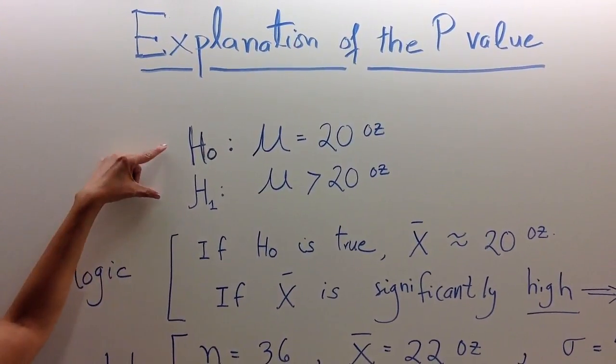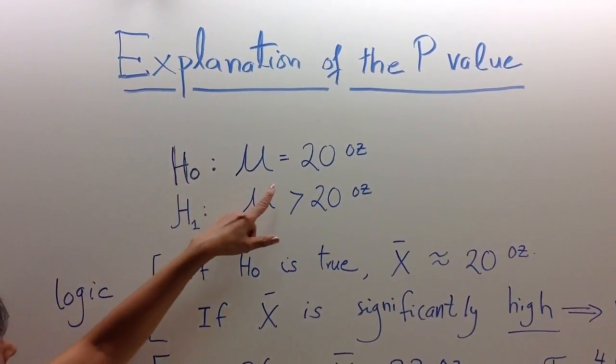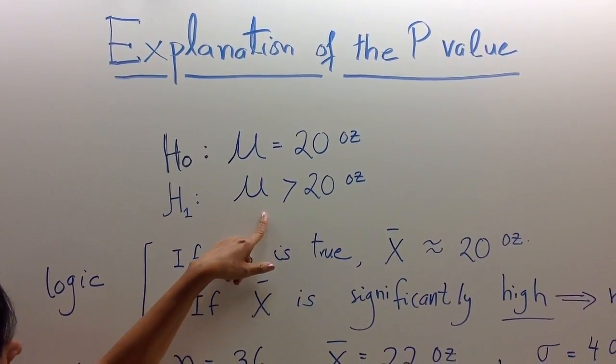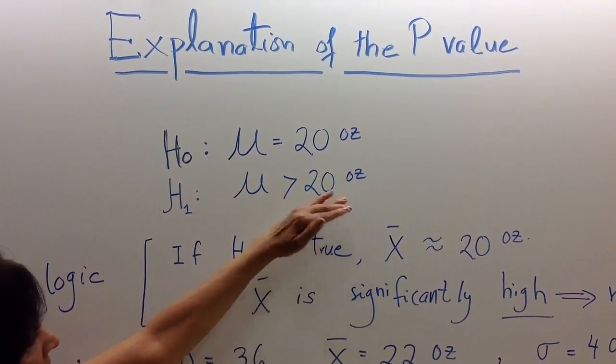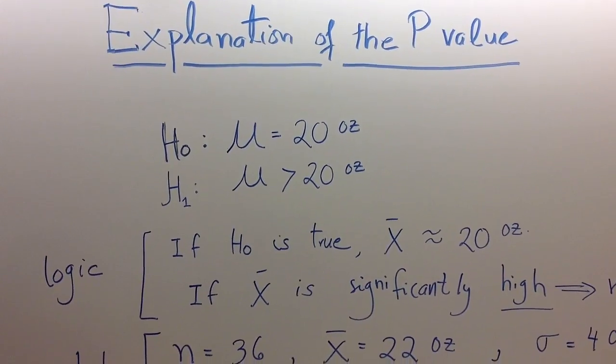So now we have two statements. Null is that mean is equal to something. Alternative in this example is that the mean is bigger than 20 ounces.